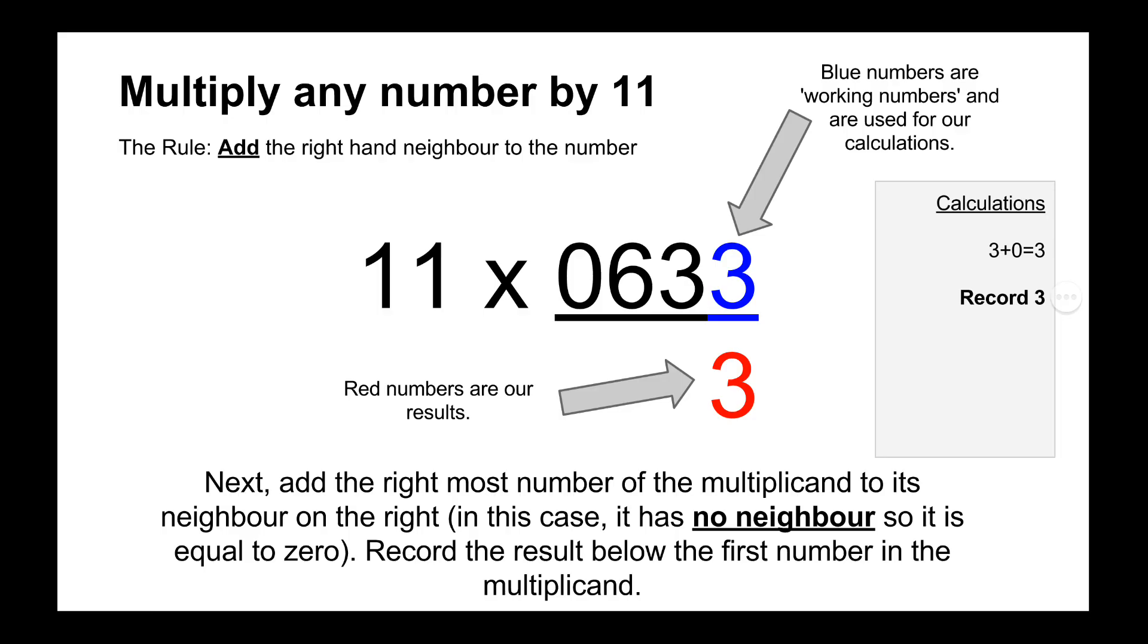So if we start with our first digit which is 3 and it doesn't have a neighbor so we can just assume that it's 0, so we do 3 plus 0 equals 3 and then we record the 3 at the bottom shown in red.